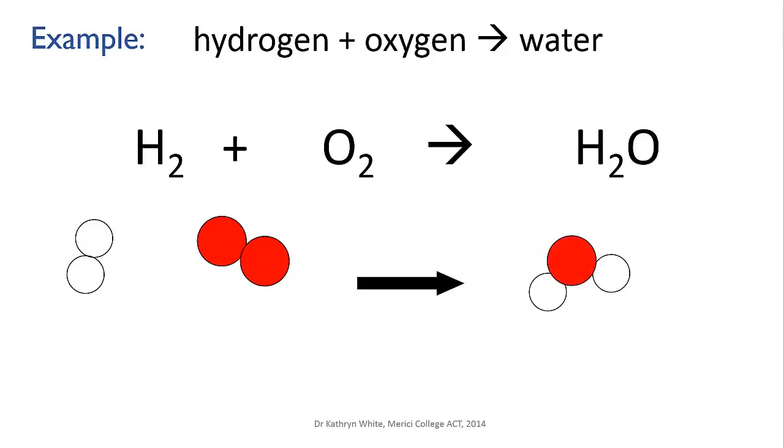Okay, let's do some atom accounting. As we've drawn them, we have two hydrogen atoms on the left and also two on the right, here and here. So we're okay for hydrogen. No hydrogen has mysteriously disappeared or been created.